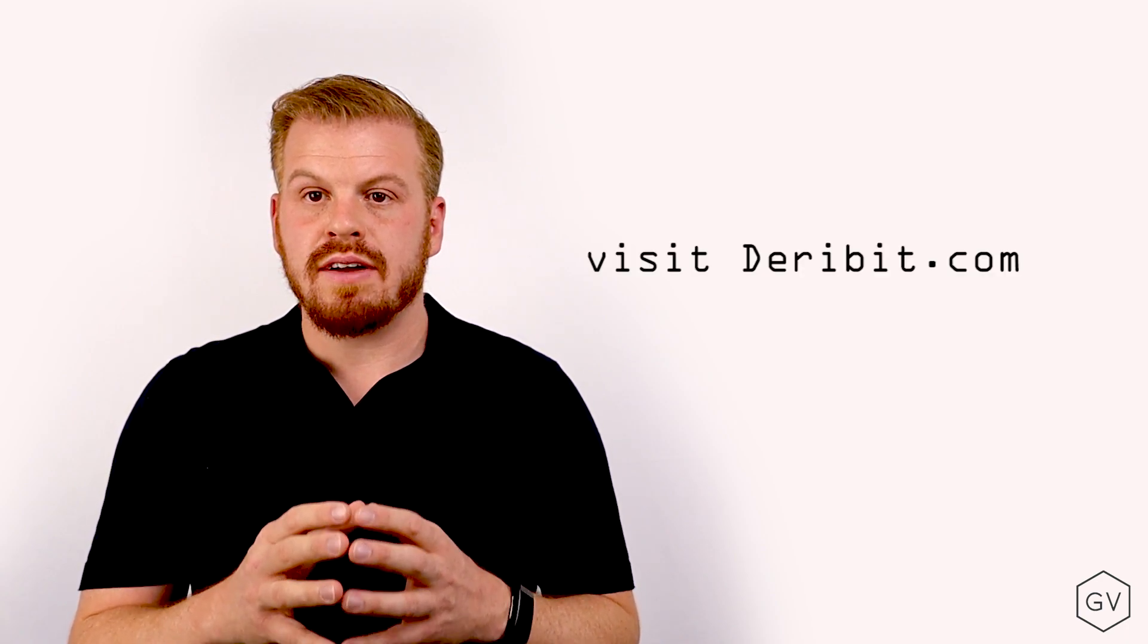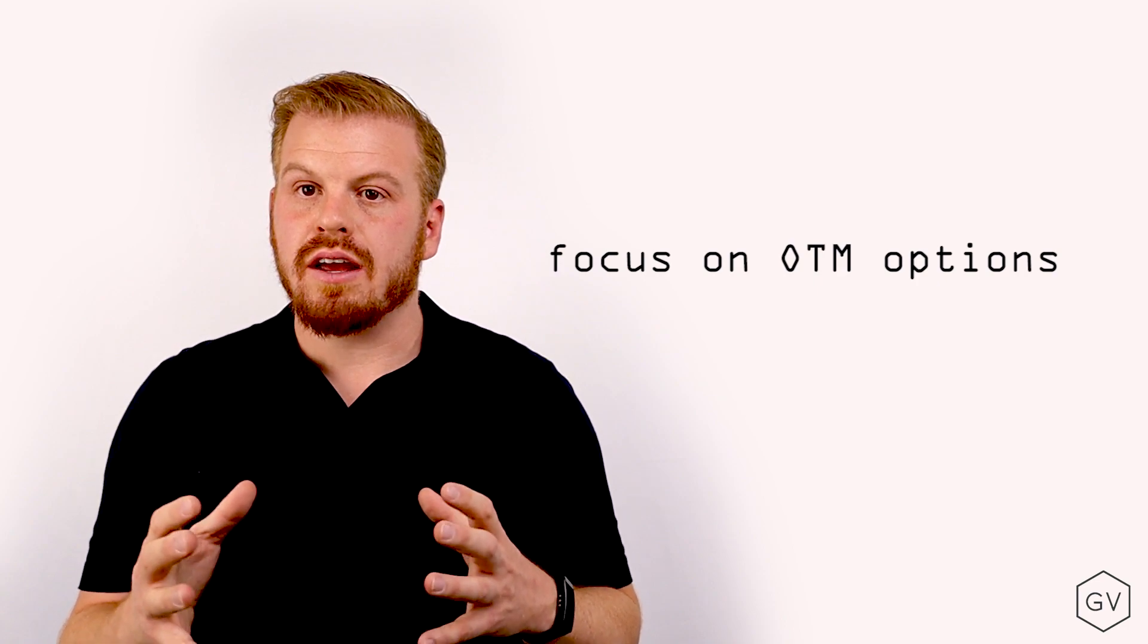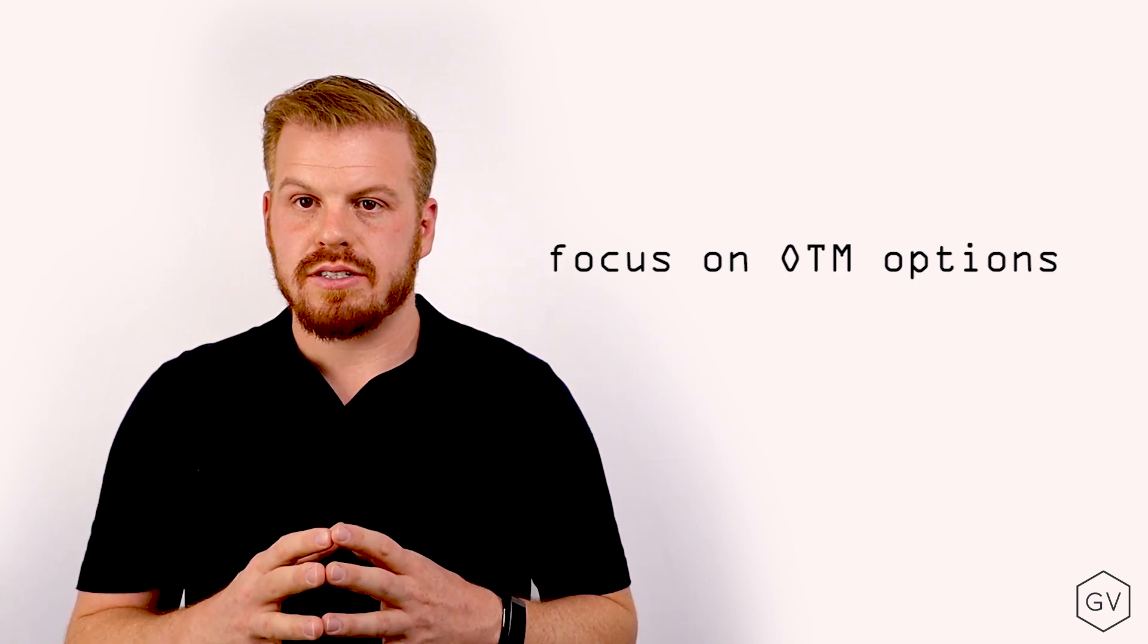If you're interested in looking at the math behind the DVOL index, you can find those calculations directly on Deribit's website. But let me give you a broad overview of some of the concepts here. The first thing to remember is that when we're looking at a volatility index, what we're mainly interested in is the time value of options or the volatility value of options. So what this means is that we need to isolate out of the money options and exclude all the in the money options.